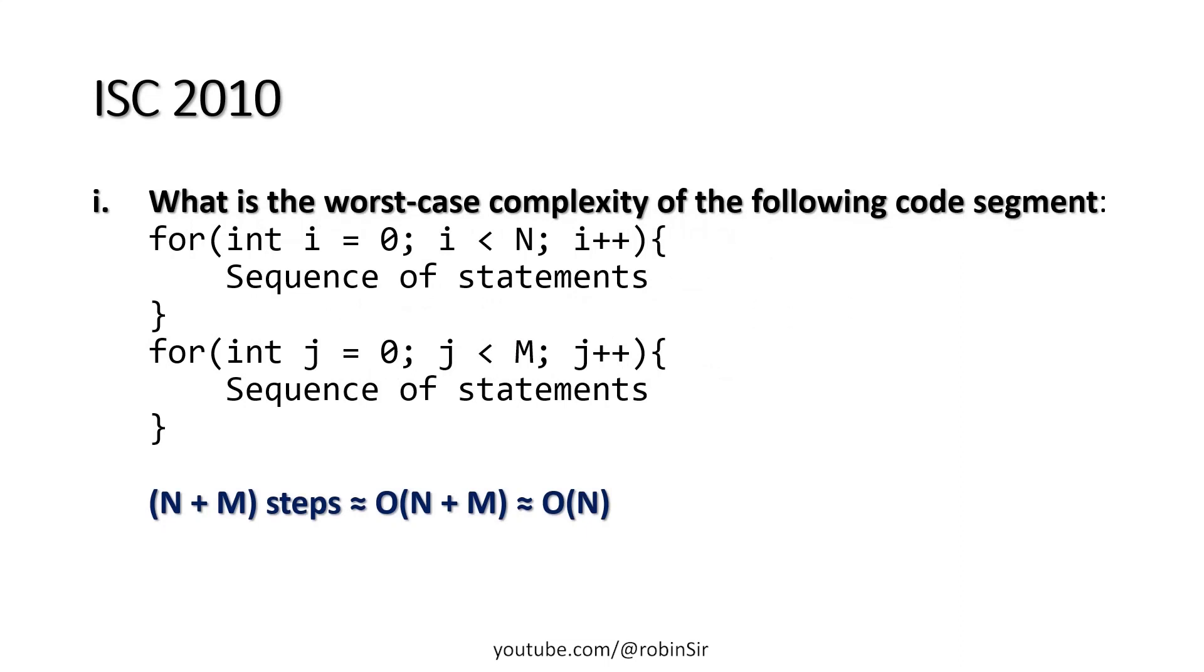There's one question from ISC 2010 theory paper. What is the worst case complexity of the following code segment? As you can see in this question, we have two separate loops. The first loop is running n times and the second loop is running m times. So the worst case complexity of the following code should be n plus m steps, and this is roughly linear in nature.